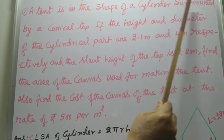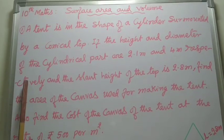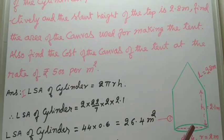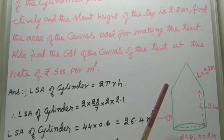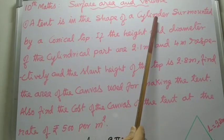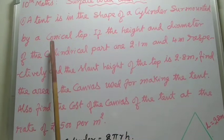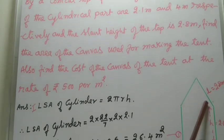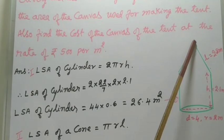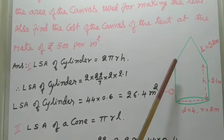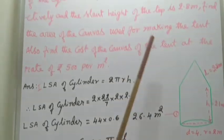Now, by reading this problem, we can draw this figure. The figure is not given, we can draw the figure. So, a tent is in the shape of a cylinder surmounted by a conical top. Therefore, this is the cylindrical part and above is the conical part. Both are part of the tent.